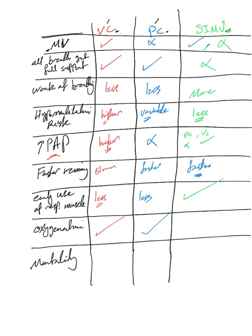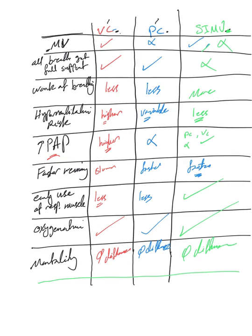There is no difference in mortality between volume control, pressure control, and SIMV. Oxygenation is also equivalent across all three modes. This is a quick comparison — we'll come back later with specific clinical scenarios and guidance on switching from one mode to another, since you may hear confusing information about when to switch based on patient conditions like tachypnea.